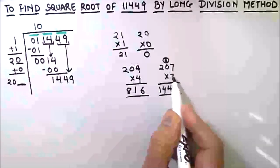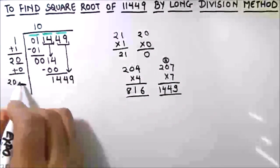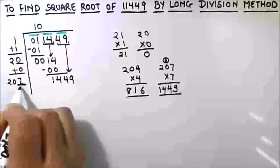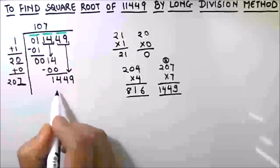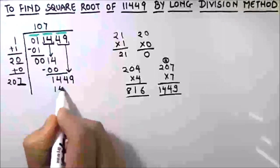So we have 207 multiplied by seven, and the result is 1449.